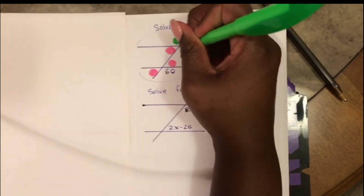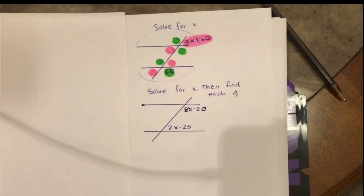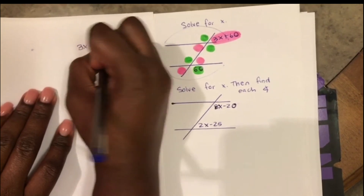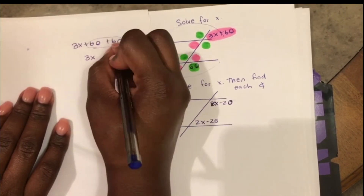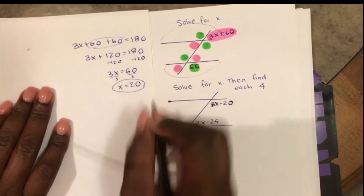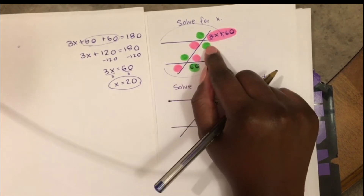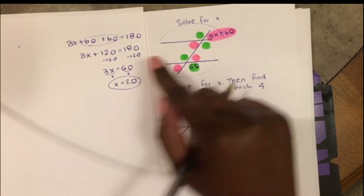Now I'm going to color code this. Notice this time I only colored one angle when I copied the pattern — this angle was not highlighted pink. I'll highlight all the other angles green. The pink and green angles are supplementary to each other, meaning their sum equals 180. So to solve for x, I'm going to add the two angles and set up a multi-step equation. All the green angles are equal to 60.